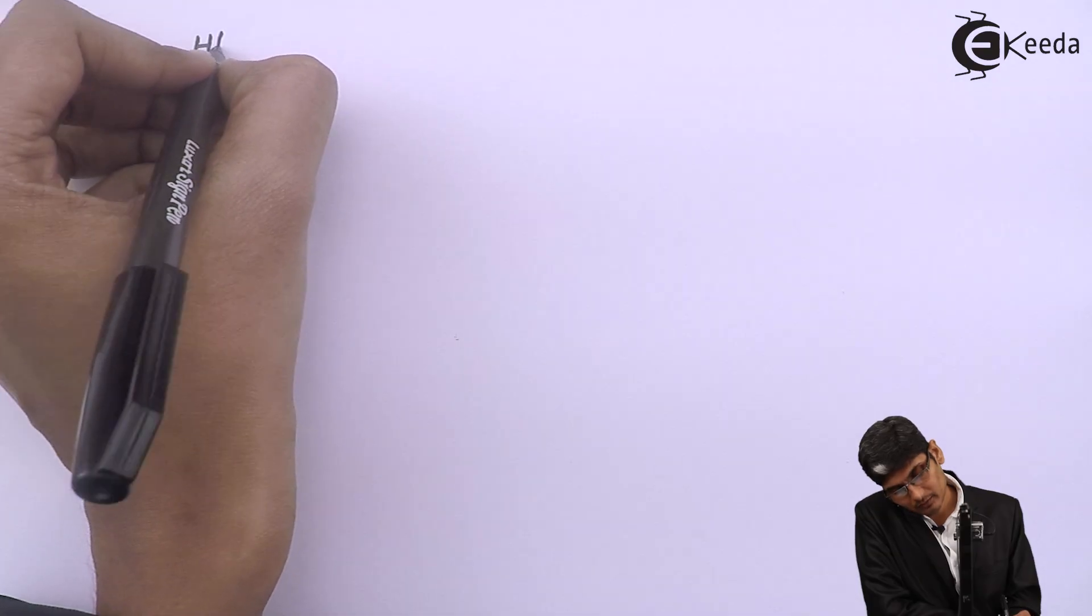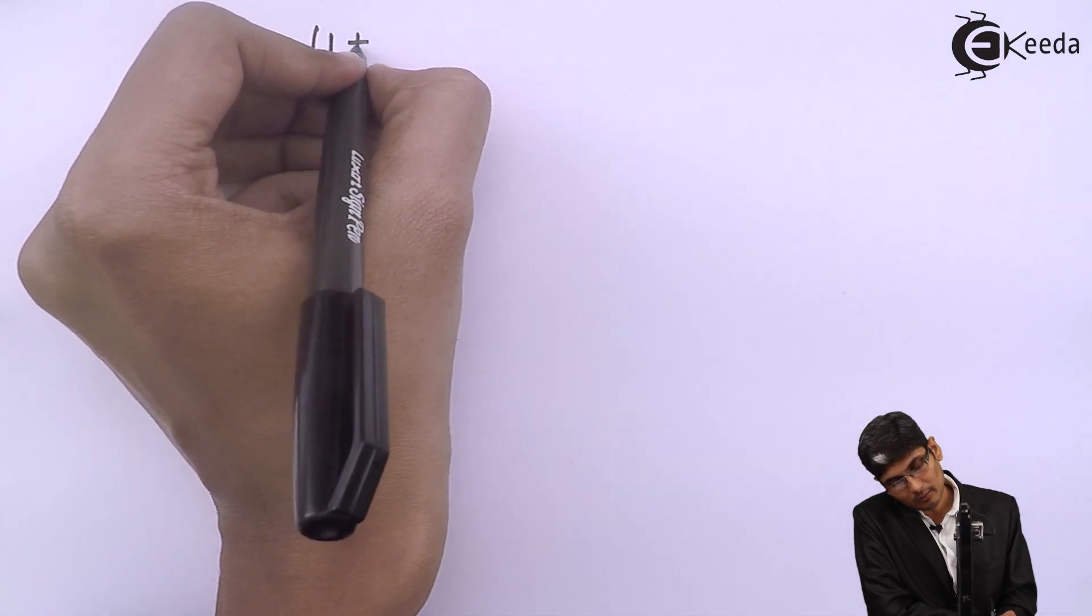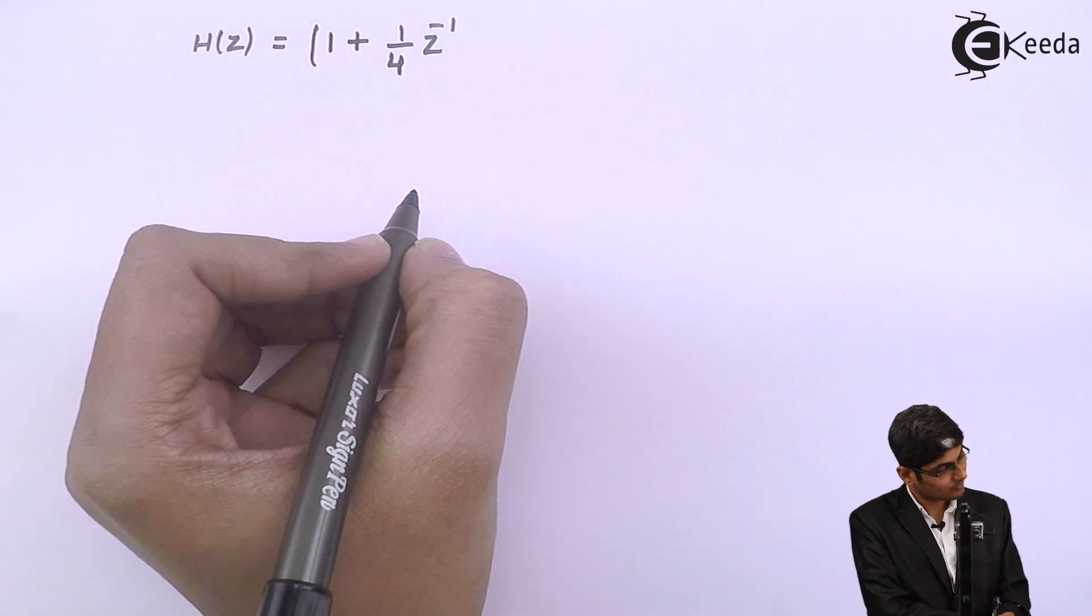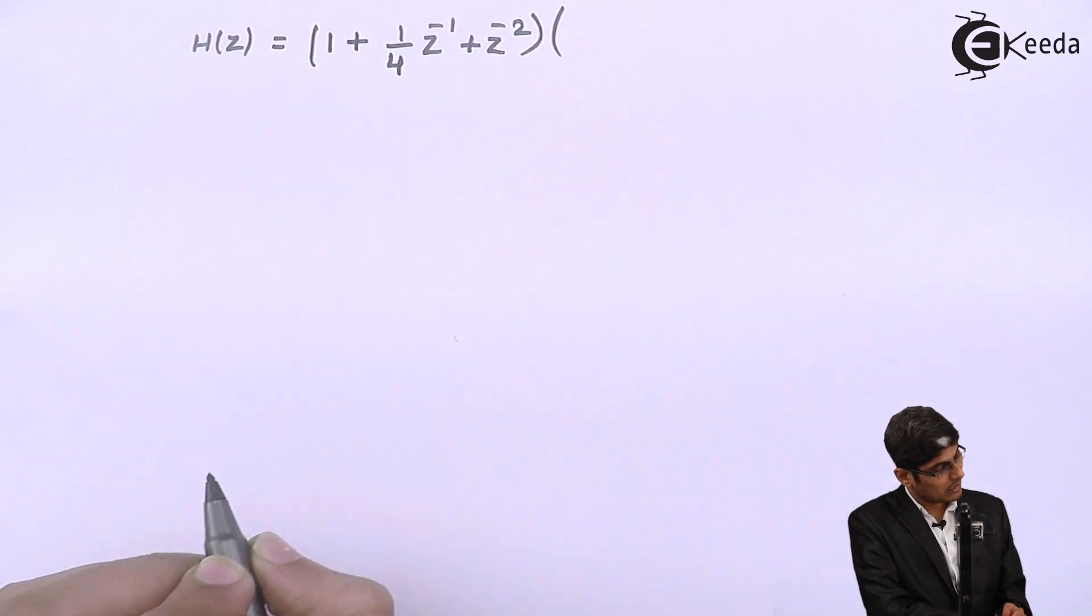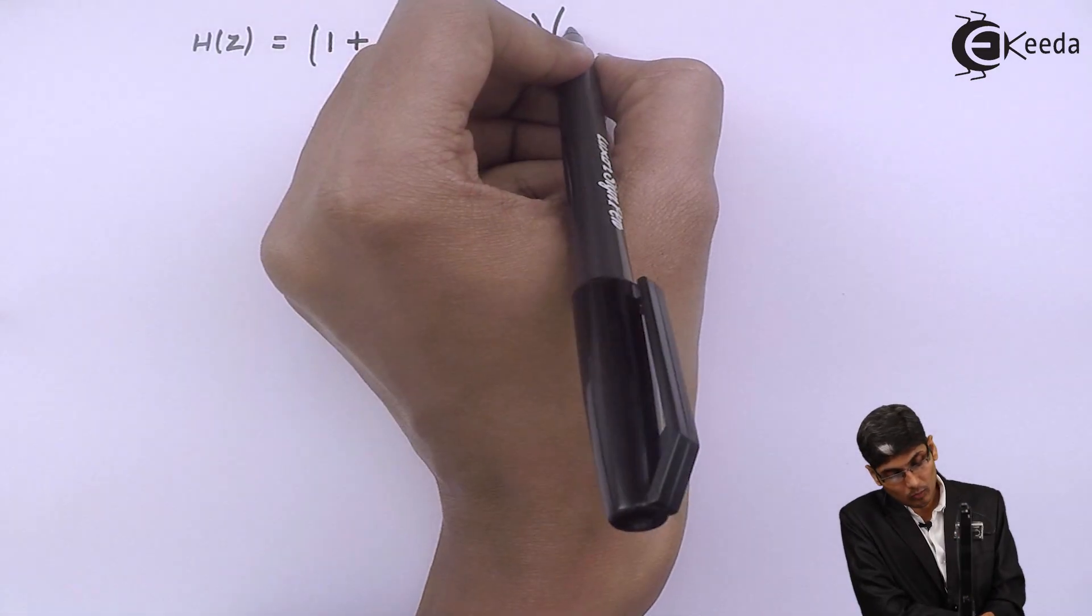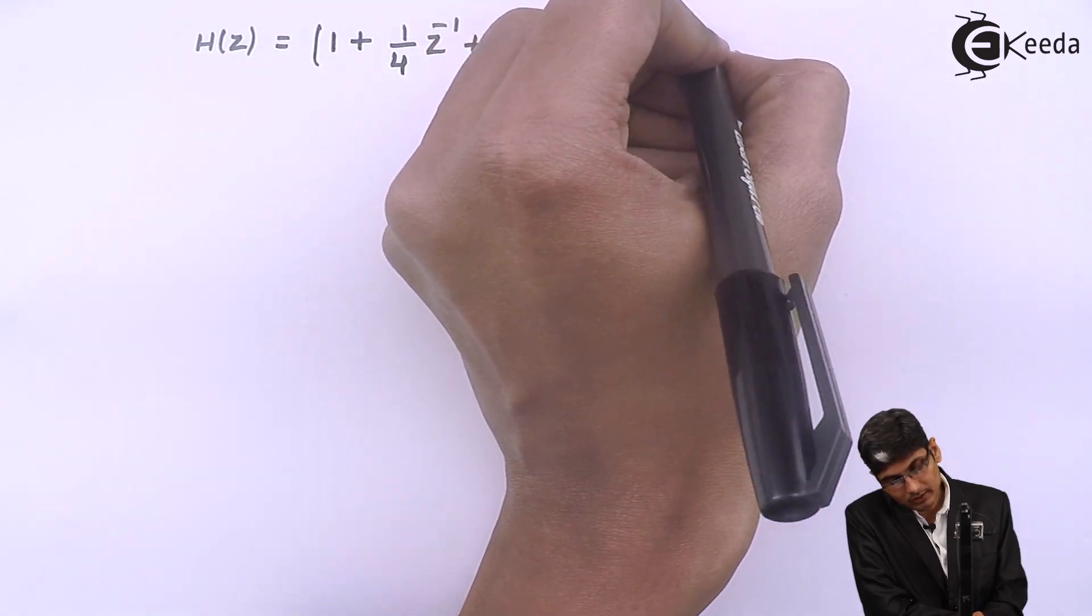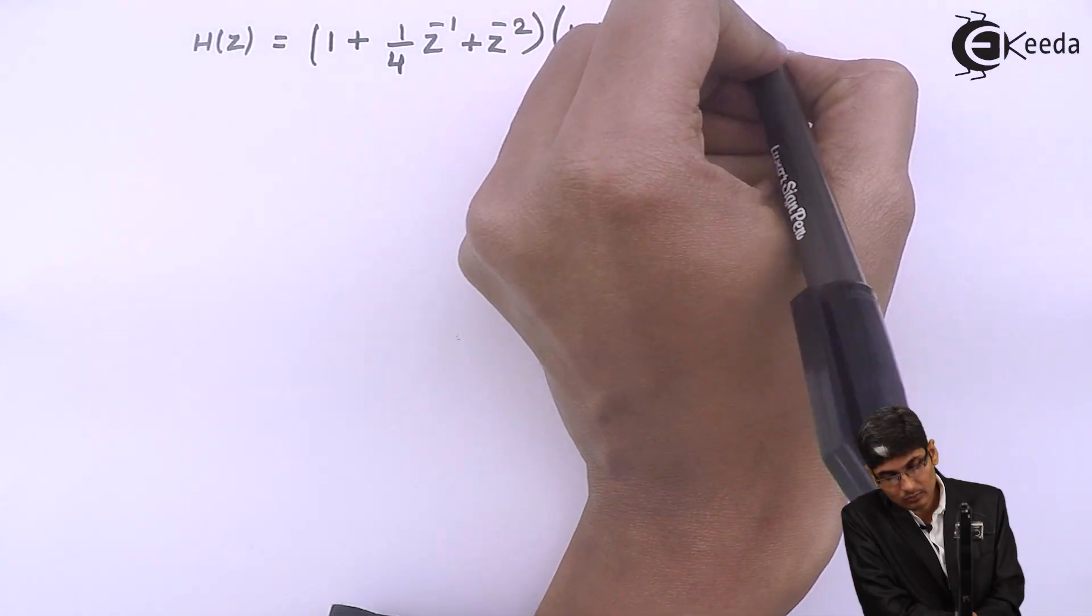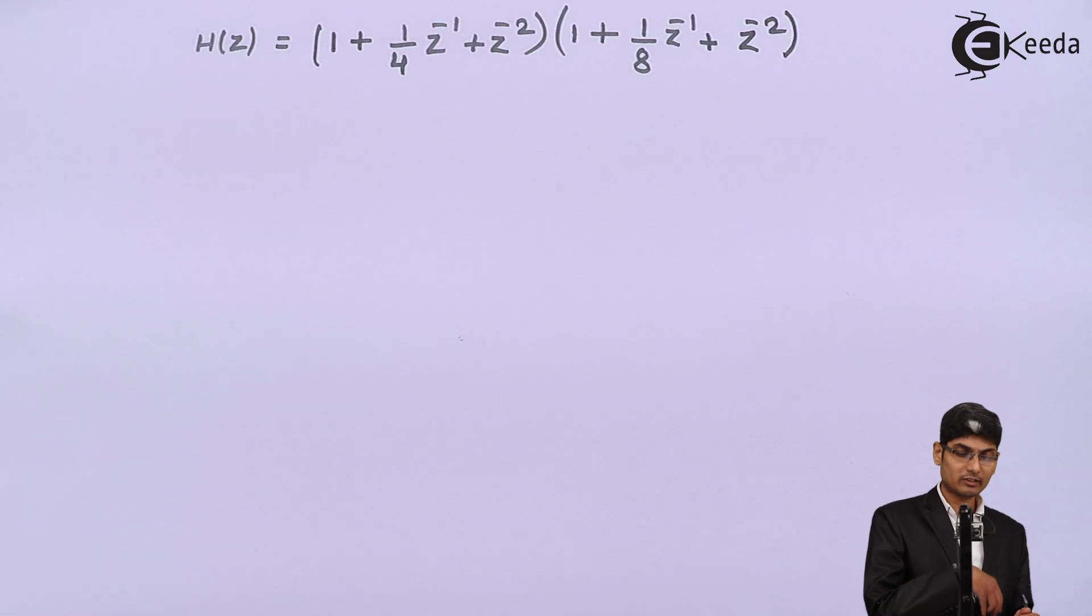The problem for today is H of Z equals to 1 plus 1 by 4 Z inverse plus Z raised to minus 2 and 1 plus 1 by 8 Z inverse plus Z raised to minus 2. This is the problem given to us and they are expecting us to deduce it using cascade form.